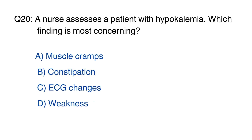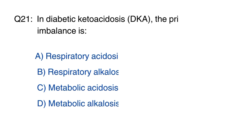Question 20: A nurse assesses a patient with hypoglycemia. Which finding is most concerning? The right option is option C, ECG changes.